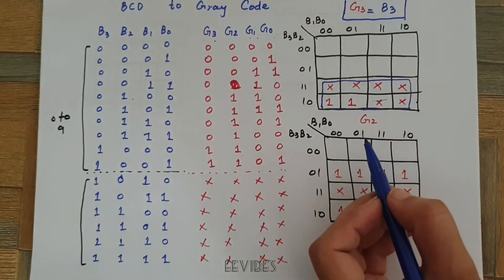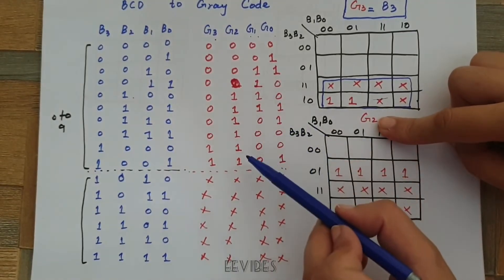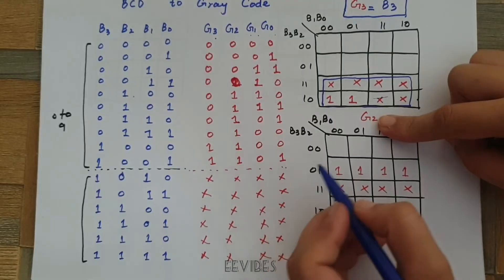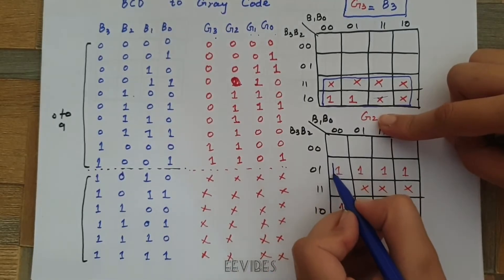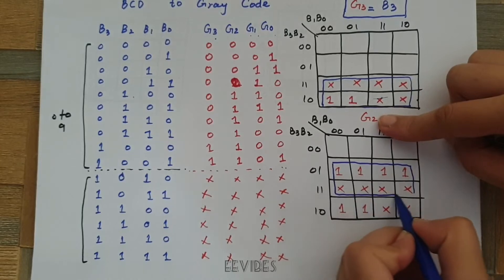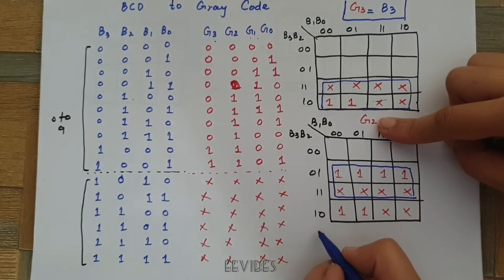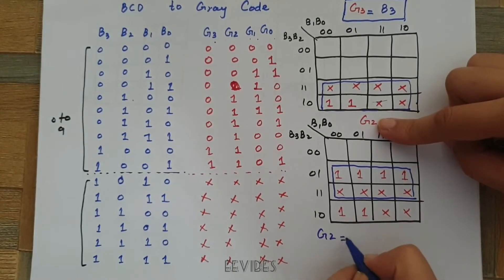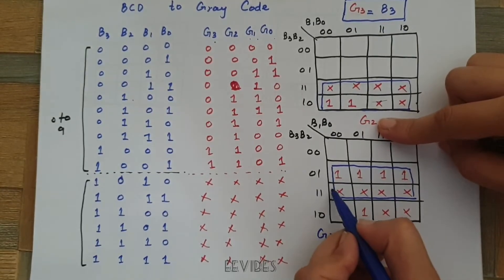Since B2 is varying from 1 to 0, that's why it's not written and similarly B1 and B0 are varying in all boxes. That's why from here you have determined the expression for G3 which is actually equal to B3. So, both bits are same.